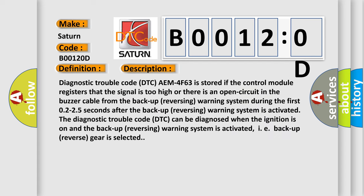Diagnostic Trouble Code DTC is stored if the control module registers that the signal is too high or there is an open circuit in the buzzer cable from the backup reversing warning system during the first 0.25 seconds after the backup reversing warning system is activated. The DTC can be diagnosed when the ignition is on and the backup reversing warning system is activated, i.e., backup reverse gear is selected.